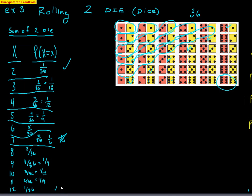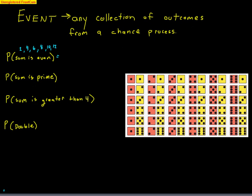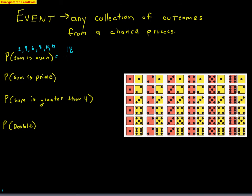To get a 2, there's 1 way. A 4 has 3 ways. A 6 has 5 ways. An 8 has 5 ways. A 10 has 3 ways. A 12 has 1 way. Adding these together: 1 + 3 + 5 + 5 + 3 + 1 = 18. So there are 18 out of 36 ways to get a sum that is even — that reduces to 1/2.